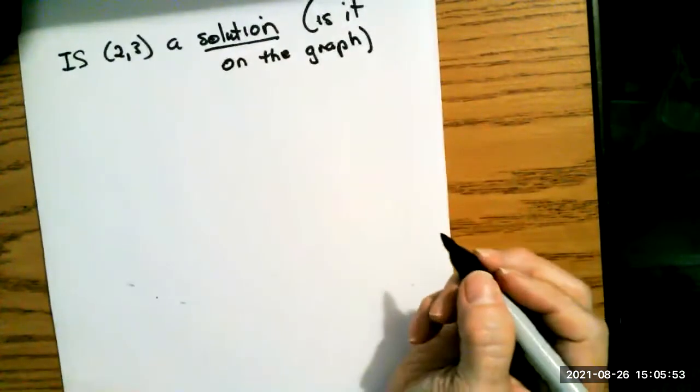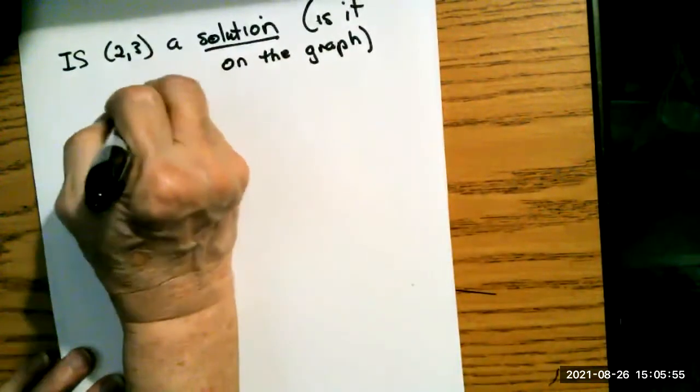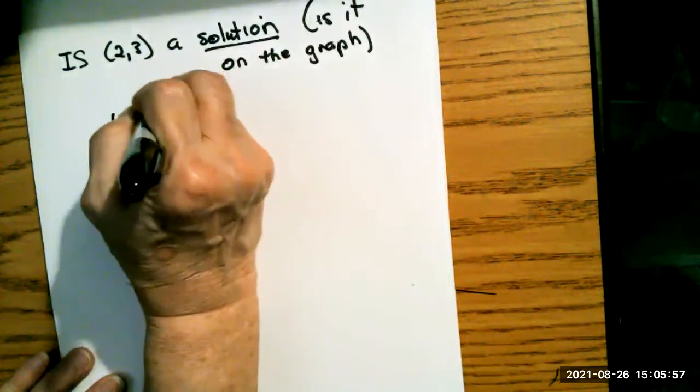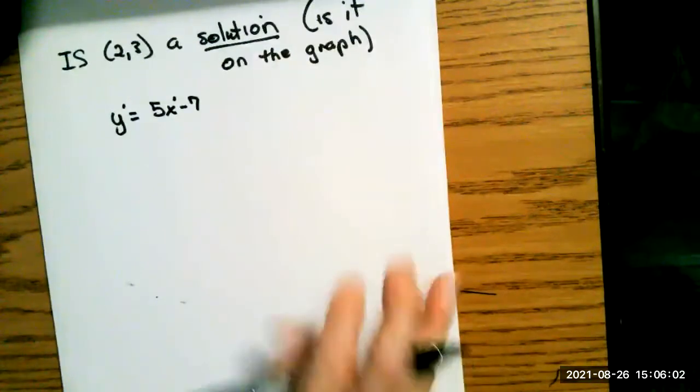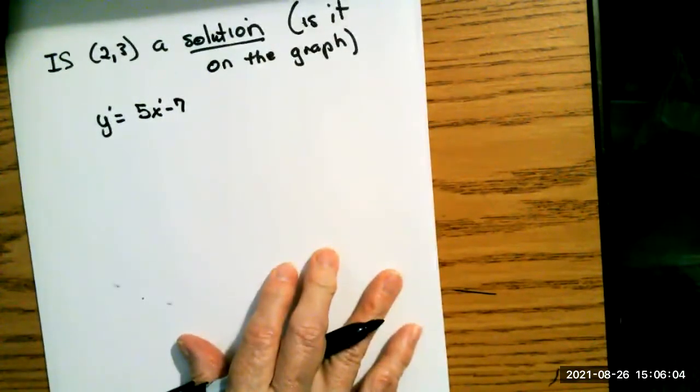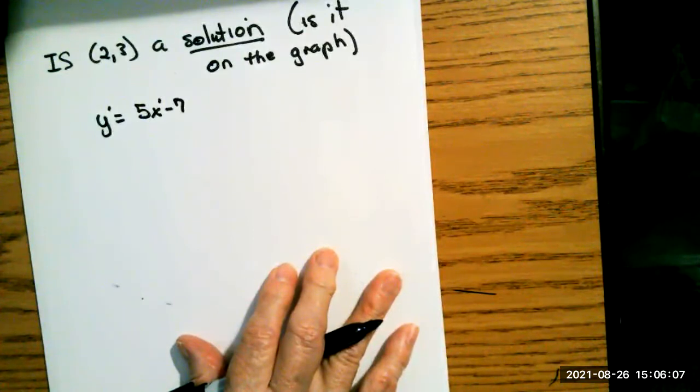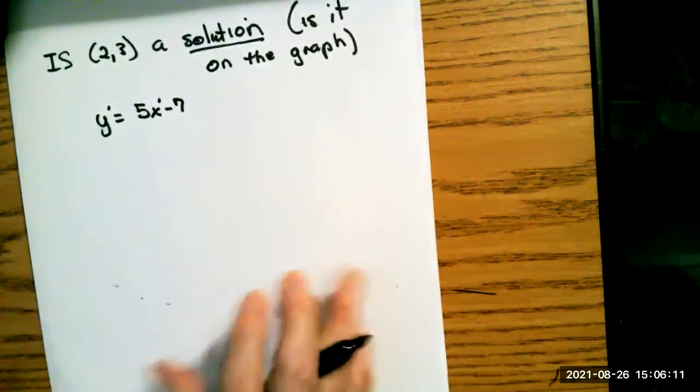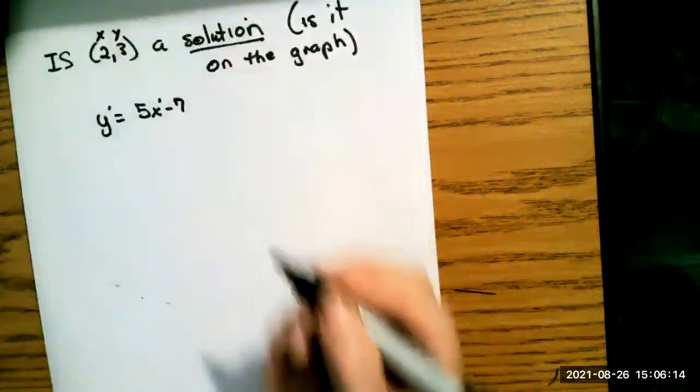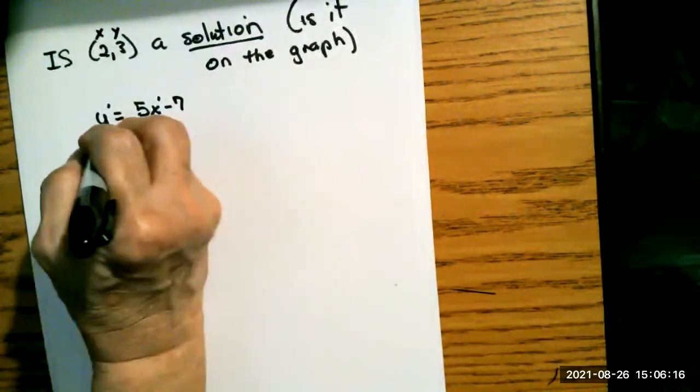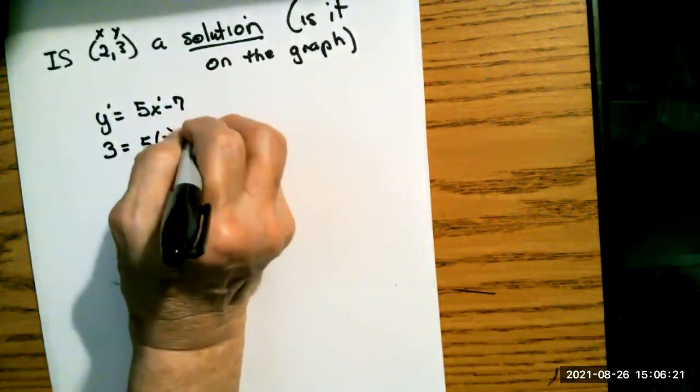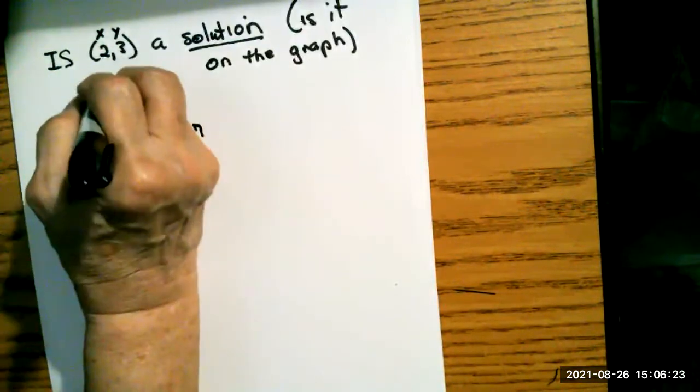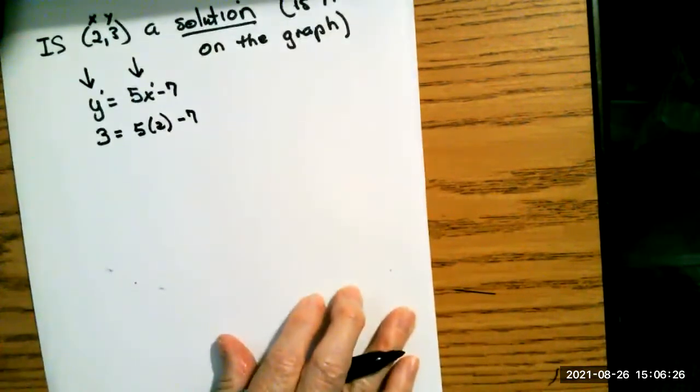So in our case, it's a line that we're going to have because our question is y equals 5x minus 7. These are to the first power. That's a line. It's also in the form y equals mx plus b for those of you that remember that information. So I want to know, is this a solution? So the 2 stands for x and the 3 stands for y.